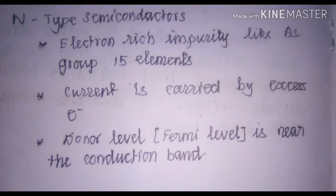Semiconductors are of two types: intrinsic semiconductors and extrinsic semiconductors. Intrinsic semiconductors conduct current without doping or adding impurities. Examples are group 14 elements; additionally, elements like arsenic and antimony can conduct current without doping other elements, and these are called intrinsic semiconductors.